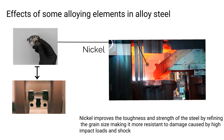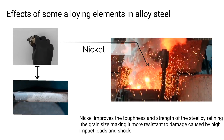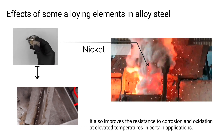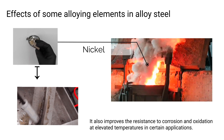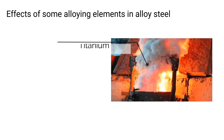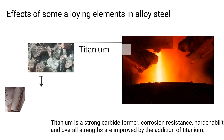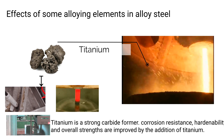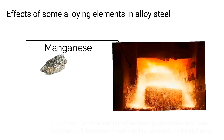Effects of some alloying elements in alloy steel: One, nickel — nickel improves the toughness and strength of steel by refining the grain size, making it more resistant to damage caused by high impact loads and shocks. It also improves resistance to corrosion and oxidation at elevated temperatures. Two, titanium — titanium is a strong carbide former; corrosion resistance, hardenability, and overall strength are improved by its addition.